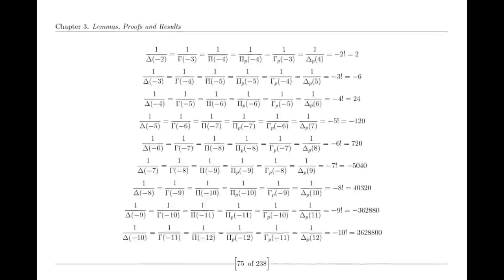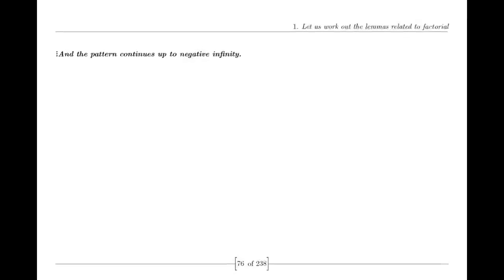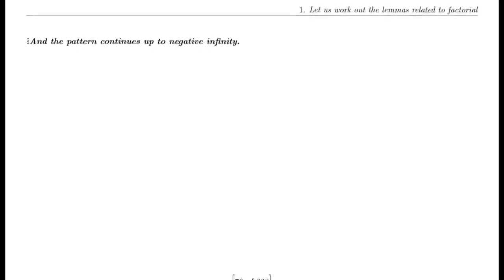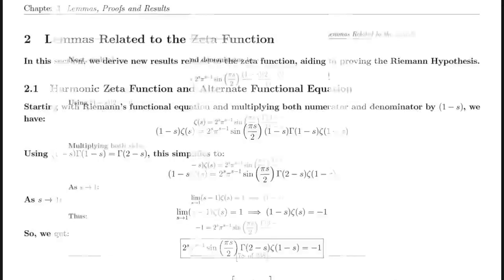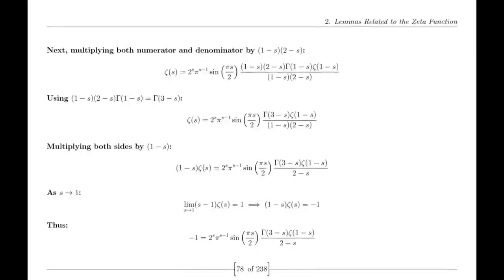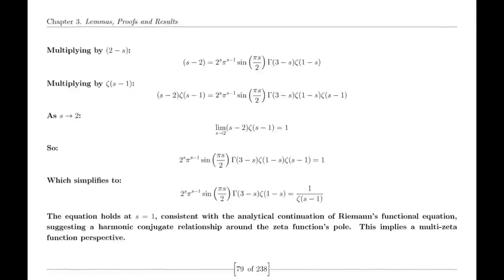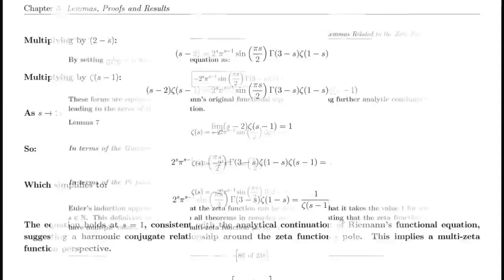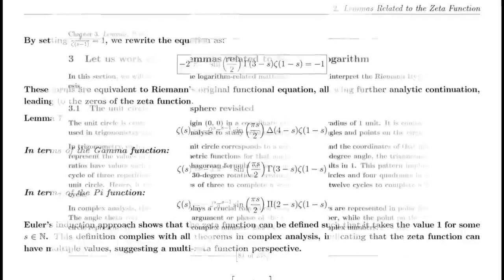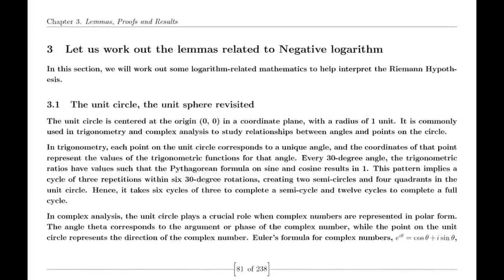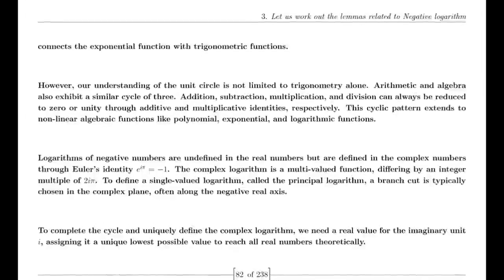While criticism continued from some quarters, a growing number of mathematicians began to see merit in Suraj's exploration of duality. Conferences began to feature talks on duality inspired by his work, inviting both proponents and skeptics to engage in constructive dialogue. As 2024 progressed, the mathematical community found itself at a crossroads — Suraj's journey had not only illuminated the Riemann hypothesis but had also sparked broader conversations about the nature of mathematical inquiry itself. The tension between innovation and tradition began to morph into a dialogue about the importance of diverse approaches. Suraj became a symbol of resilience and creativity, demonstrating that even the most unconventional ideas could inspire progress, reminding everyone that the pursuit of knowledge is often a winding path filled with both questions and revelations.